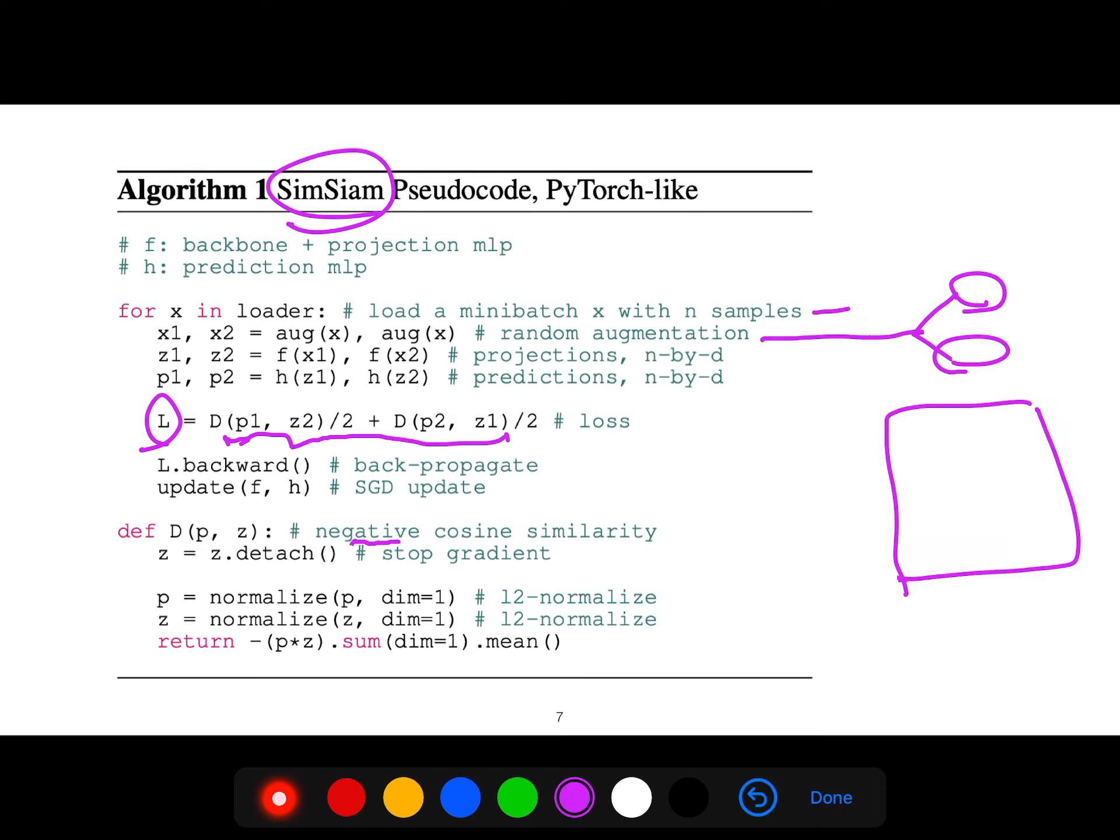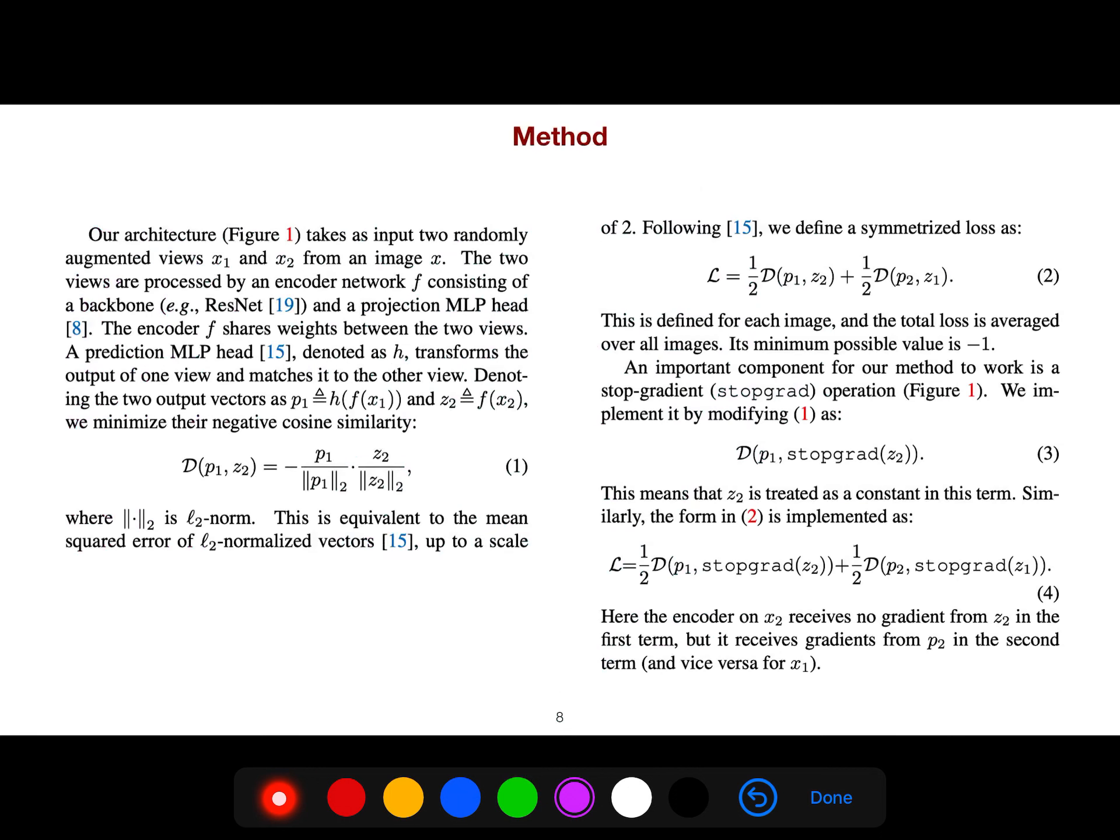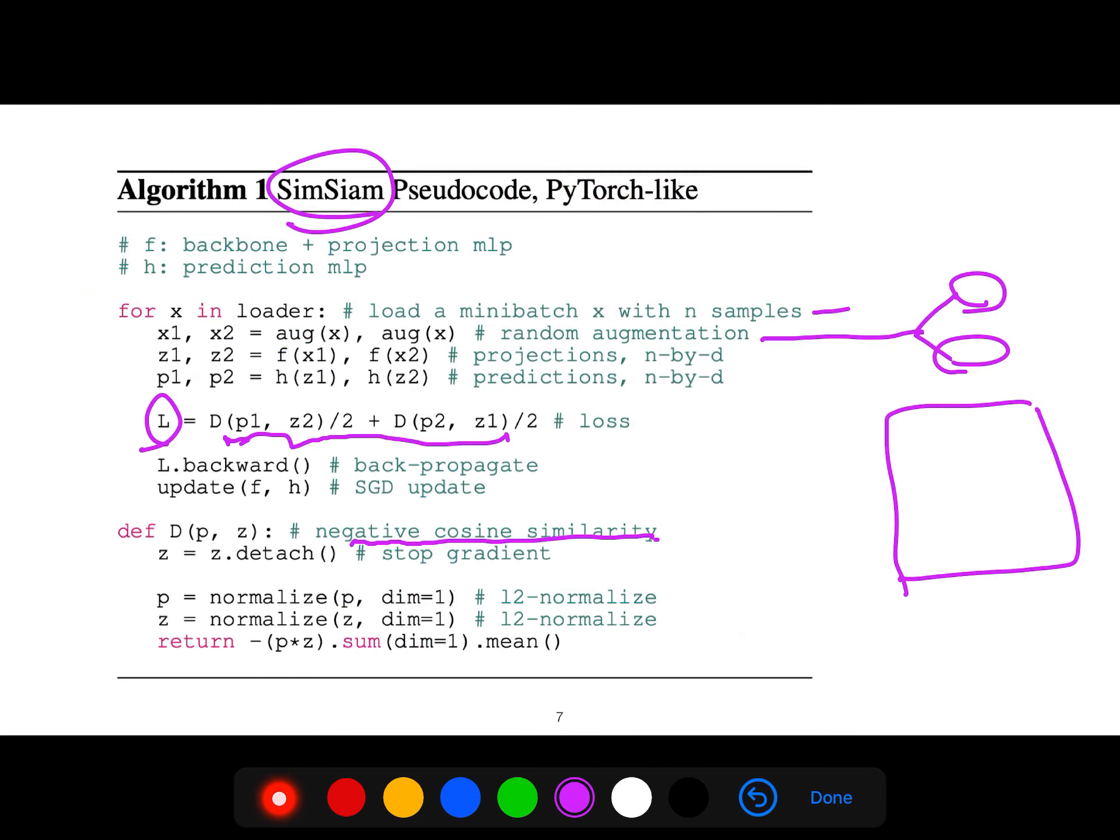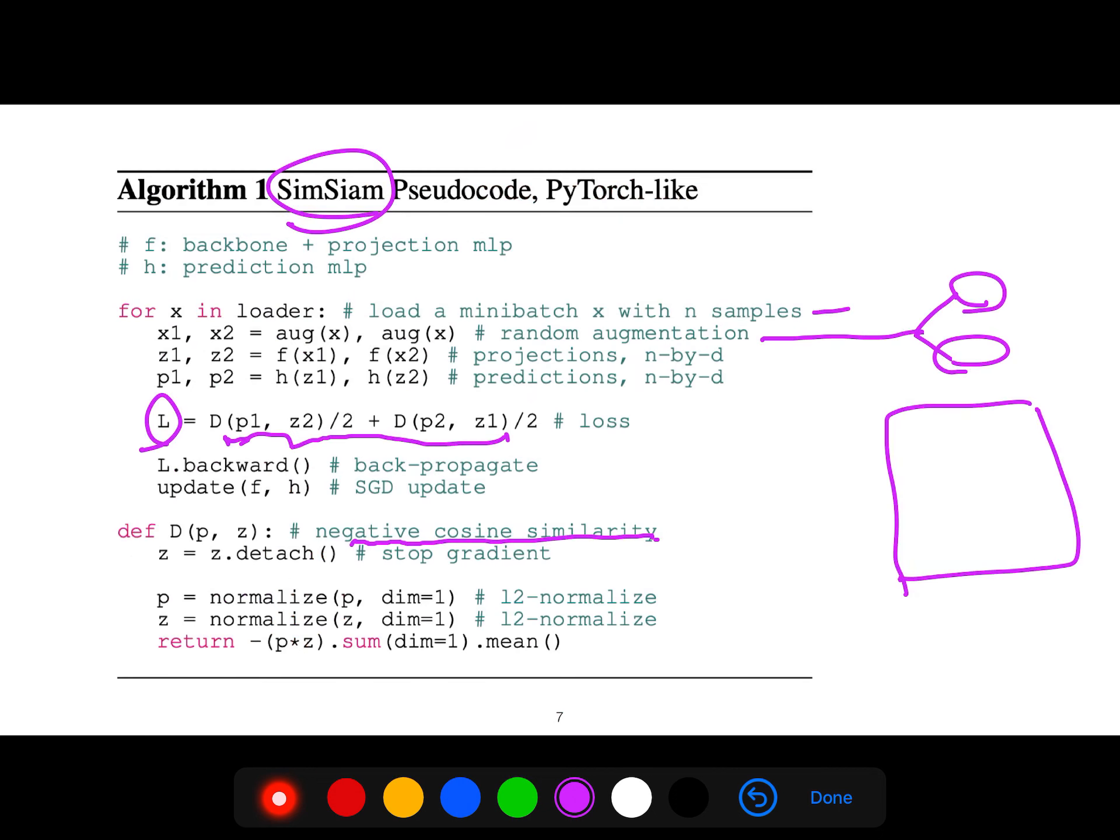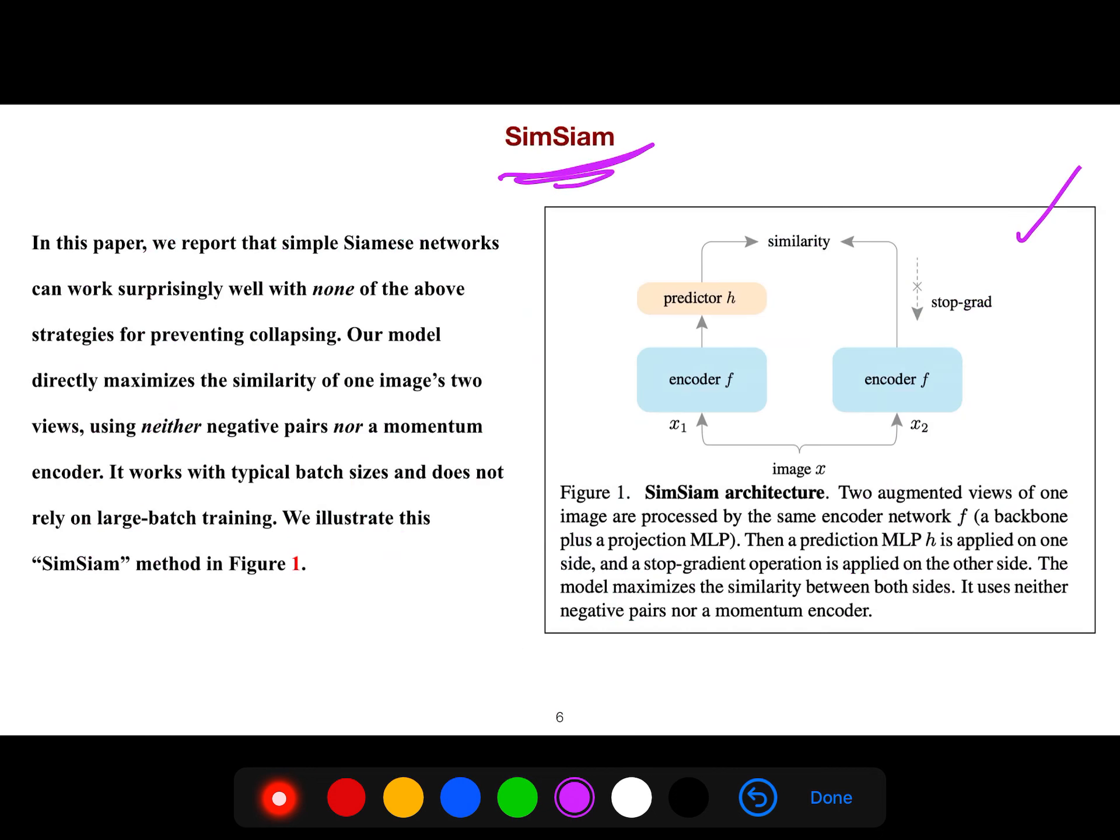And then we use negative cosine similarity. So the architecture, this figure shows everything is symmetric except the predictor that makes it unsymmetric. I've explained the stop-gradient. We don't do back propagation; it's just the exponential moving average.